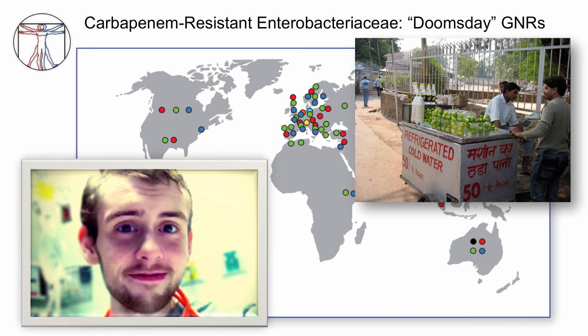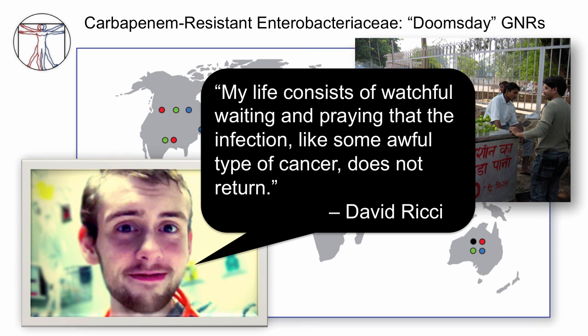This is a young man called David Ritchie, a lovely young guy who went overseas after college to volunteer working with children orphaned due to the HIV epidemic. He was injured terribly — his leg was cut off by a train — and the people there saved him and got him back to Seattle. By the time he arrived, he had a whole variety of gram-negative rod infections in his stump that we simply could not effectively treat with any antibiotic. The only thing that saved his life was a series of surgeries amputating higher and higher on the stump of his femur. He is cured, but his quote: 'My life consists of watchful waiting and praying that the infection, like some awful type of cancer, does not return.' More and more people are going through this problem, not only in India but in other emerging economies around the world.